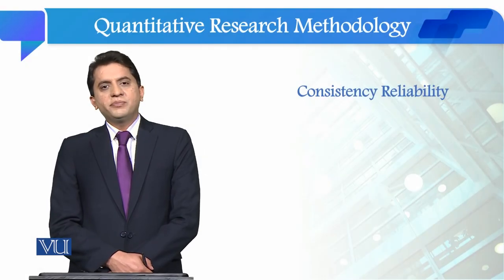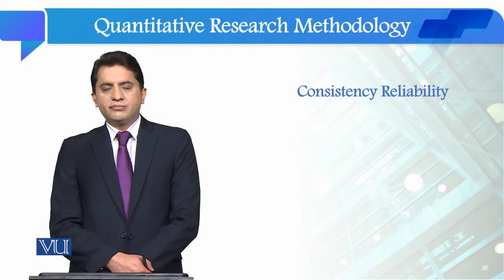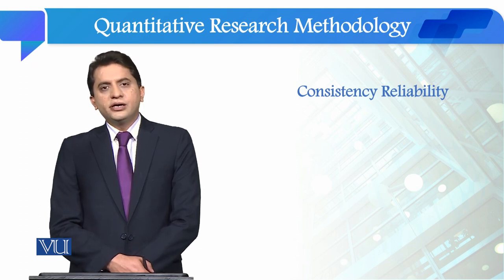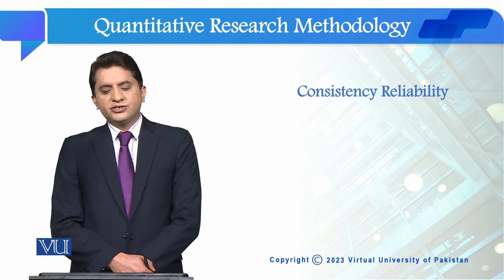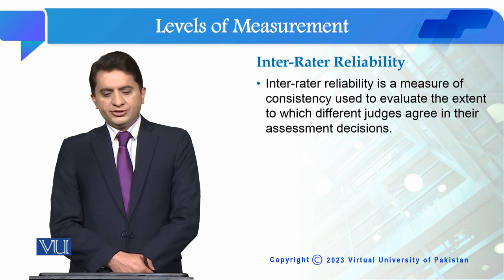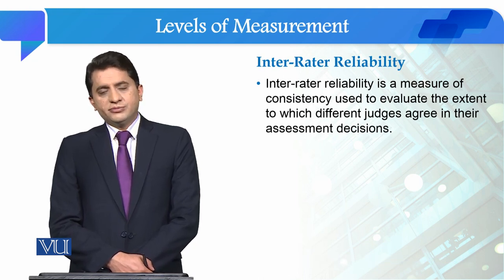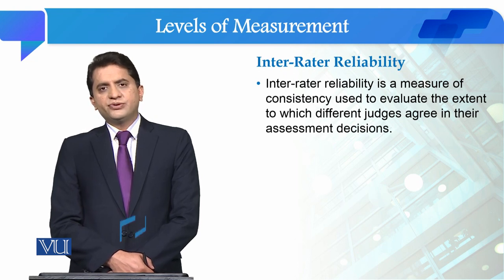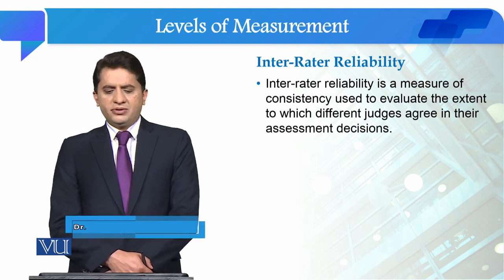Dear students, we have talked about stability and reliability and now we are going to study consistency reliability. As I discussed with you, there are three types of consistency reliability: inter-rater reliability, inter-item reliability, and split-half reliability. Let's first see the inter-rater reliability.